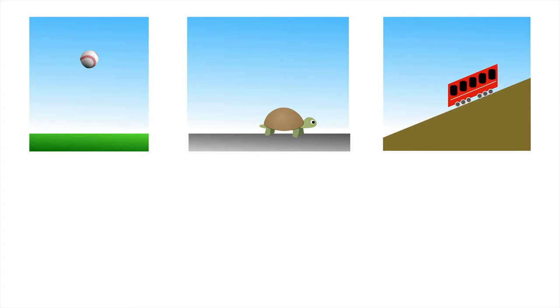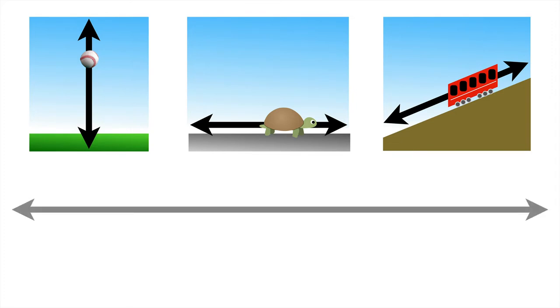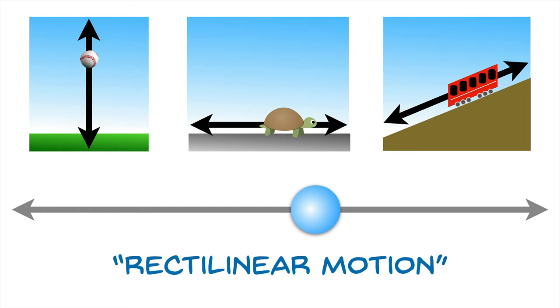What all these three examples have in common is that we're looking at motion of something along a line. So let's abstract that principle—we'll imagine a line and some sort of object that's constrained to move along the line. And that's all we mean by rectilinear motion, motion along a line.